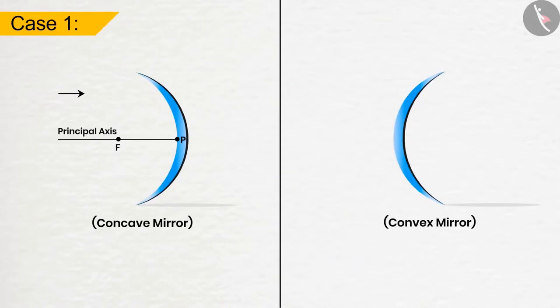Case 1. If the ray of light travels parallel to the principal axis, after reflection, it will pass through the focus of the concave mirror or appears to diverge from focus of the convex mirror.